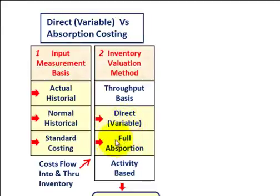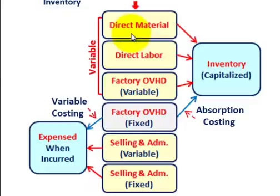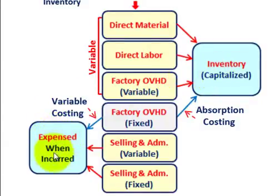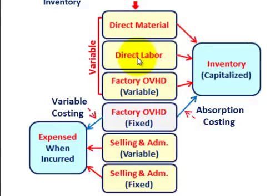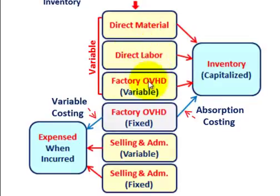Let's compare the direct or variable method to the full absorption method. We need to determine what's going to be capitalized in inventory and what's going to be expensed when incurred. For variable costing, direct materials, direct labor, and variable factory overhead — those three items go into inventory and are capitalized.